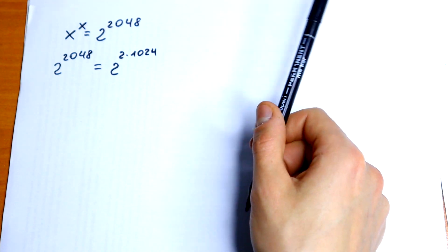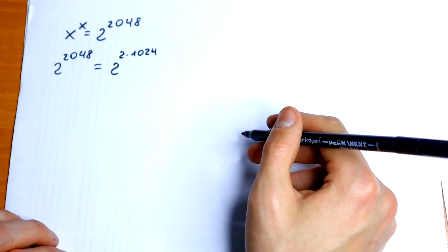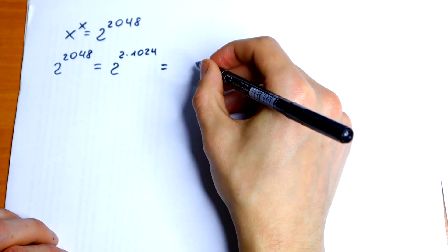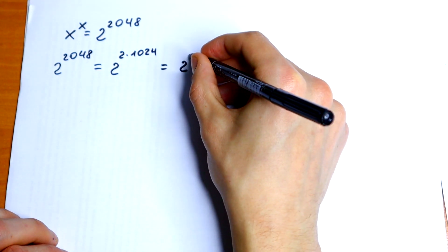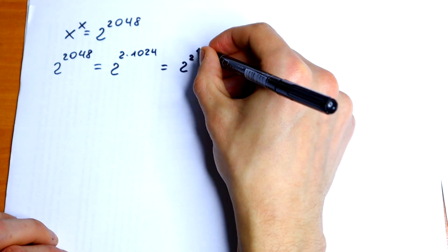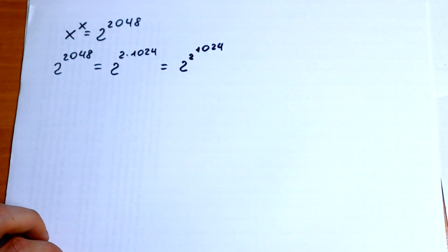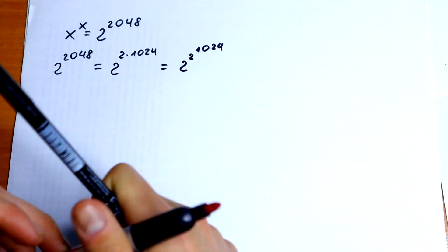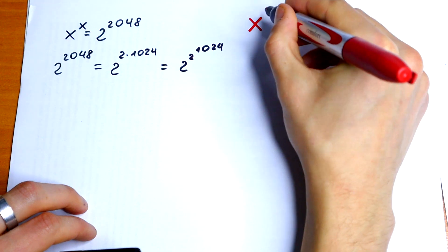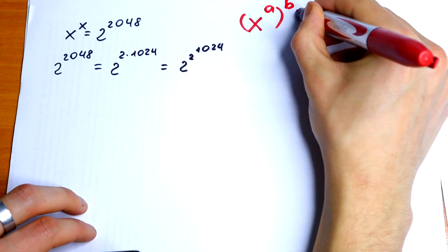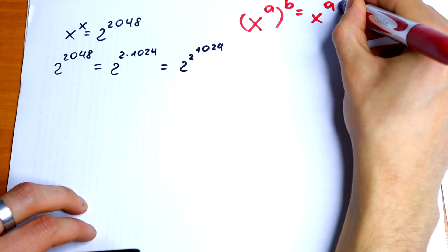There is a property where you can write this as 2 to the square power, all raised to the power 1024. I think you understand this and this is clear for you. So, if we have x to the power a, all raised to the power b, it will be equal to x to the power a times b.